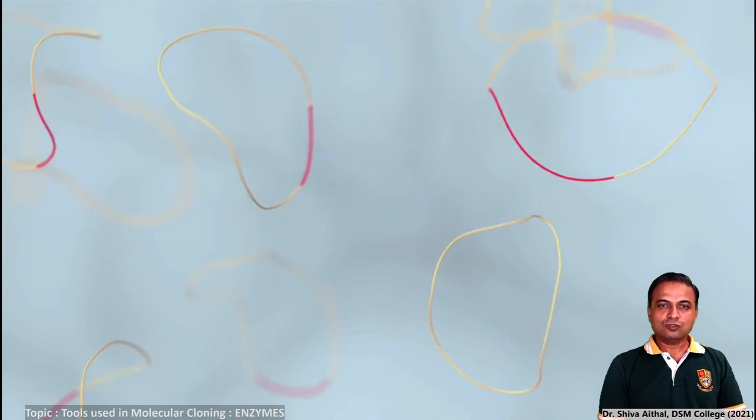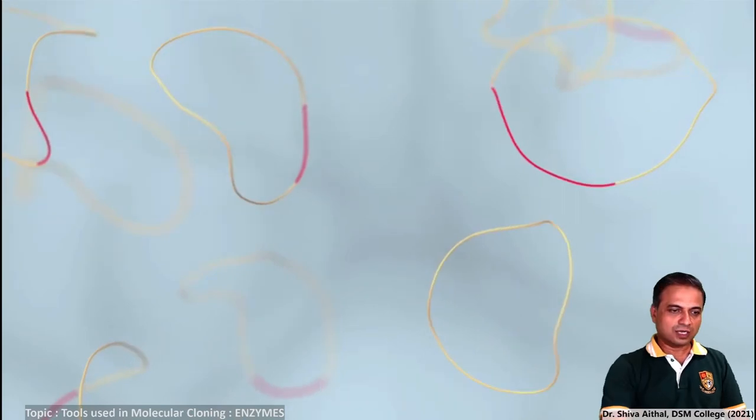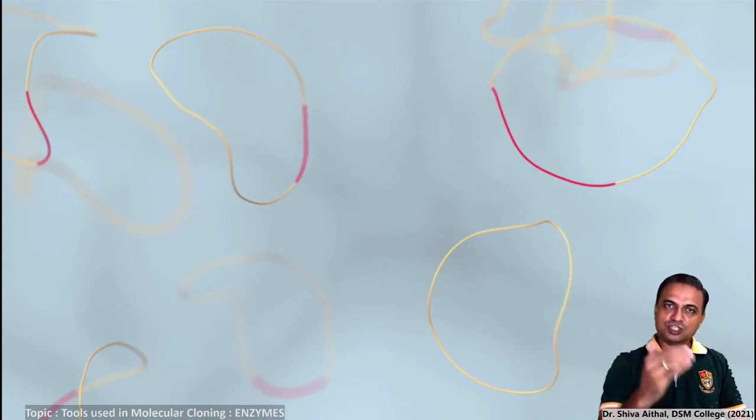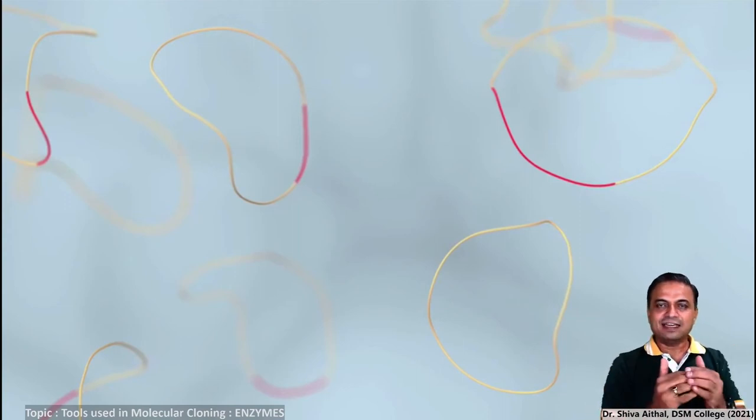There can be one plasmid with an insert and another plasmid without insert. You can see here, there are two types of plasmids. This is a plasmid which has got the gene of interest and this is a plasmid which went blank - means there was a cut, there was a chance of the gene of interest getting introduced, but what happened here was it self-annealed.